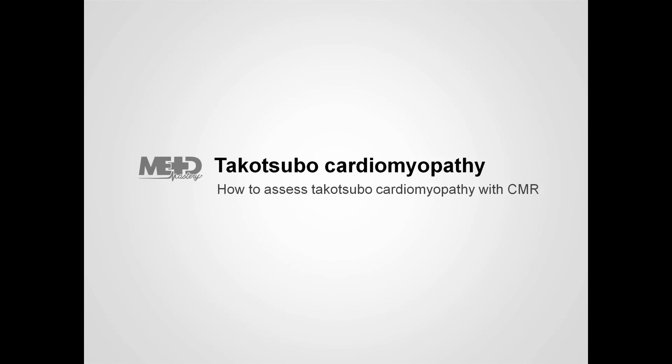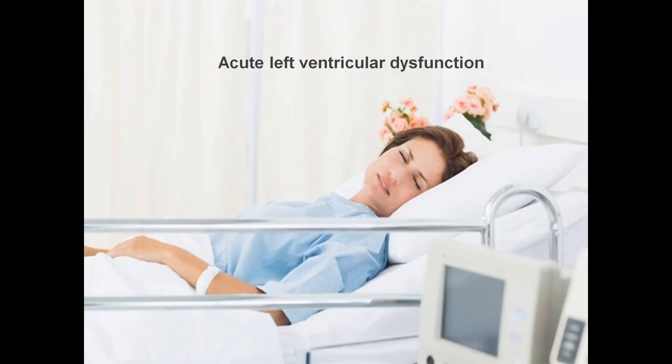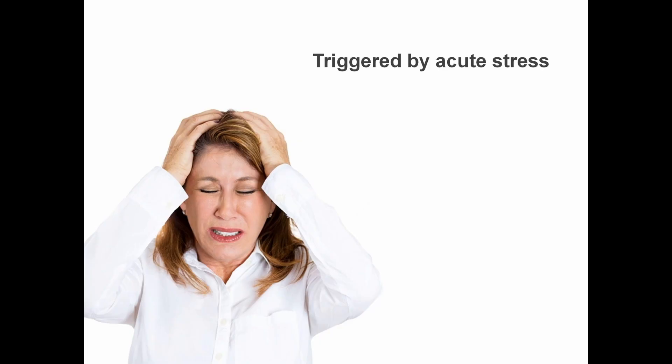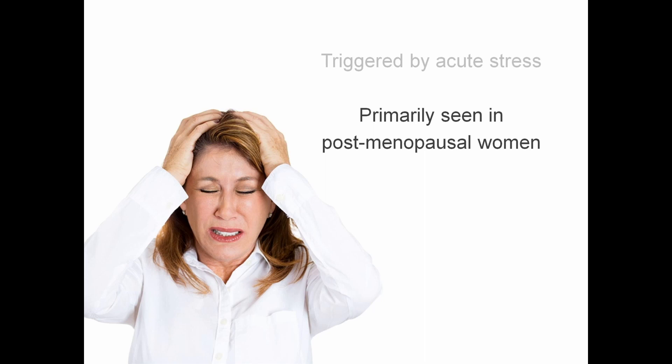In this lecture, we're going to learn how to assess Takotsubo cardiomyopathy using CMR. Takotsubo cardiomyopathy is a condition in which there is acute left ventricular dysfunction, characterised by apical ballooning. It is triggered by an acutely stressful event, such as the sudden loss of a loved one, and is primarily seen in post-menopausal women.